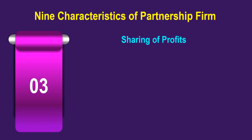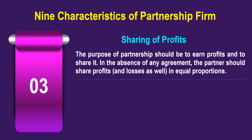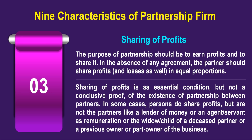The third characteristic is sharing of profits. The purpose of partnership should be to earn profits and share them. In the absence of any agreement, the partners would share profits in equal proportion, including losses. Sharing of profits is an essential condition but not conclusive proof of a partnership — some persons share profits without being partners, such as a money-lender, an agent or servant receiving remuneration, or a widow or child of a deceased partner.